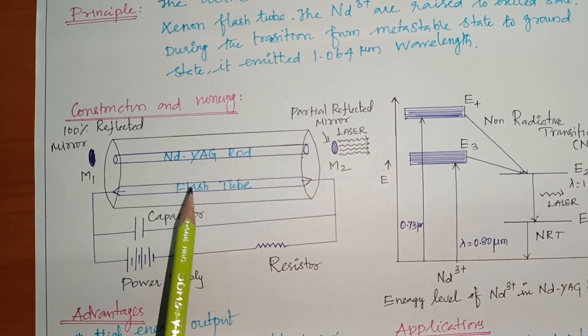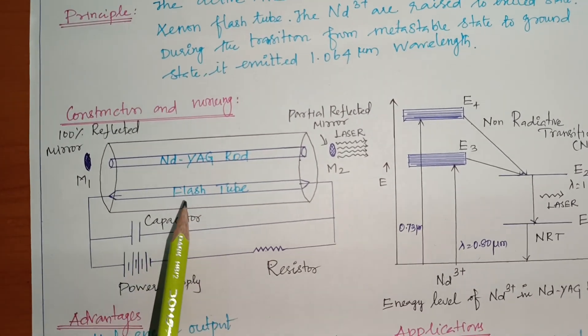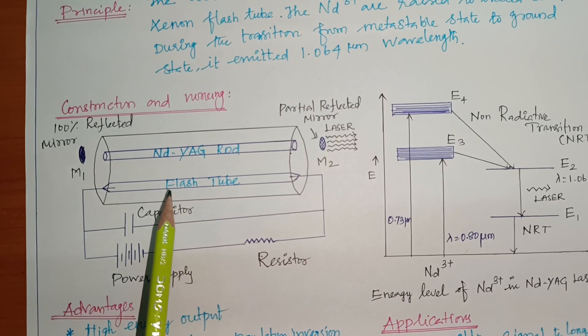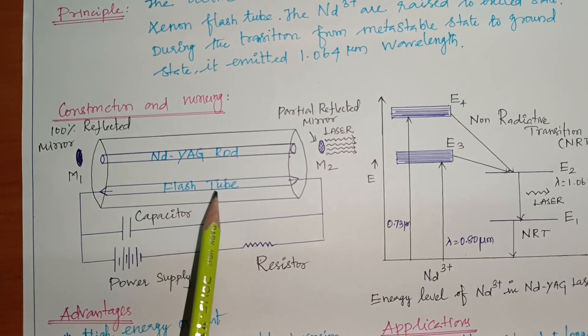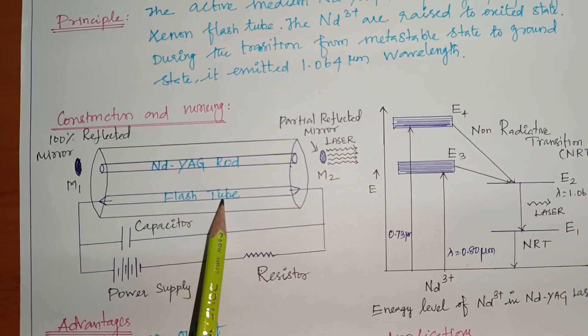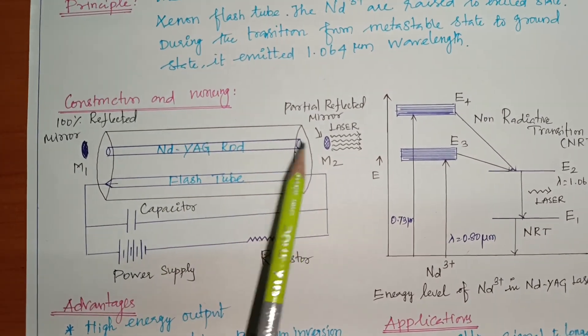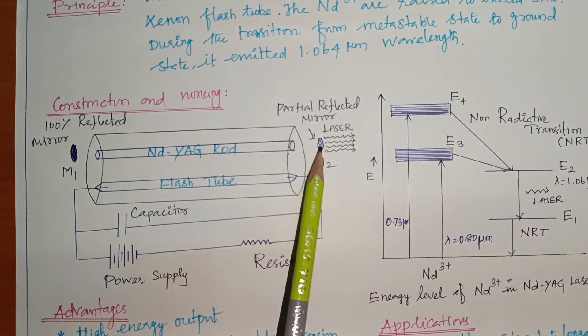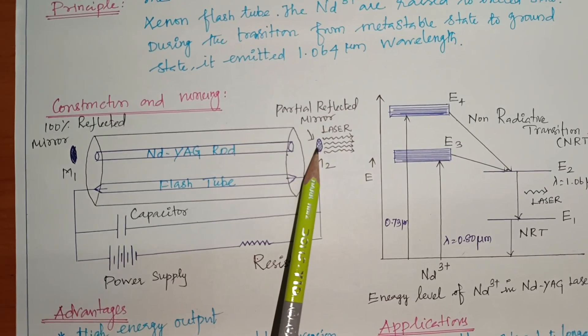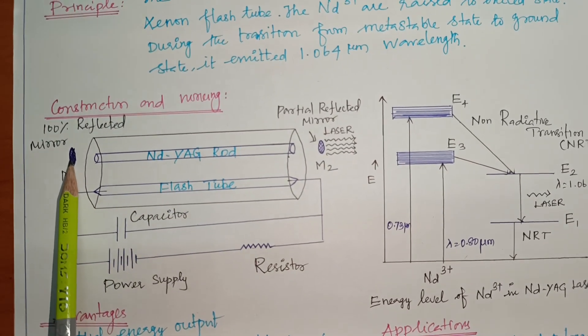And second one, pumping source. Here pumping source is used flash tube. Flash tube is used. And third one is optical mirror. So in the rod both ends well polished. We are kept optical mirrors. One is partially reflected mirror. Another one is fully reflected mirror.